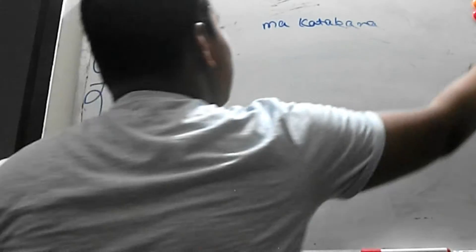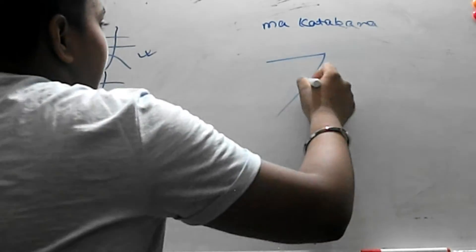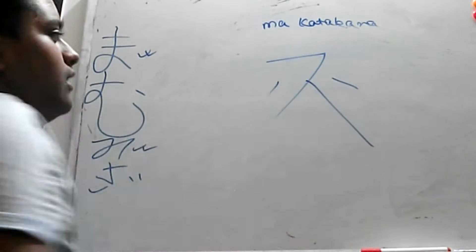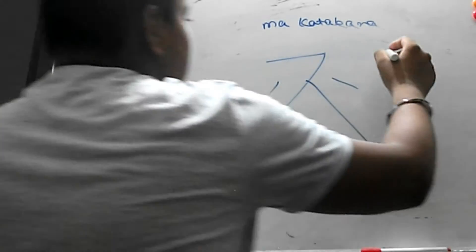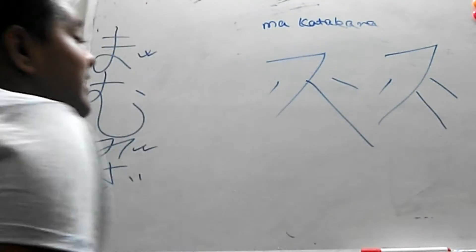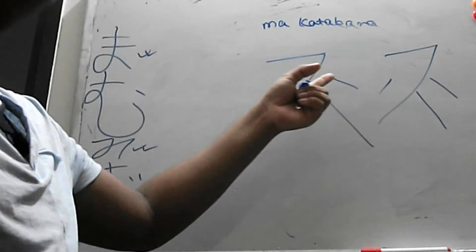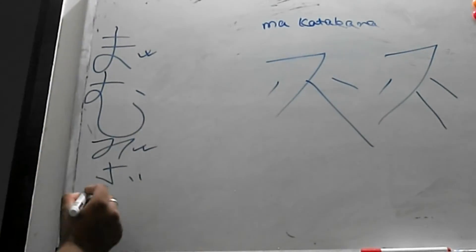Mo Is like Ichi Ni San Shi. Ichi Ni San Shi. Whereas this is stroke 1, this is stroke 2, this is stroke 3, and stroke 4 will make your Mo.